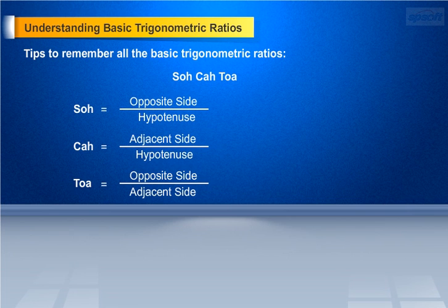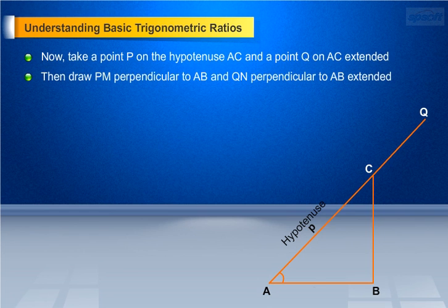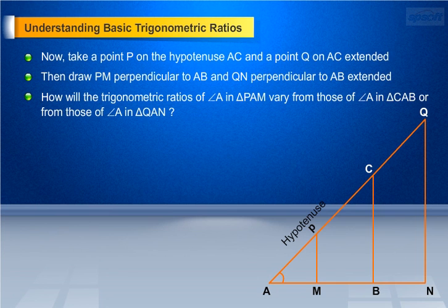Now that you are able to identify and recall the six trigonometric ratios, let us move further by considering a right triangle ABC. Take a point P on the hypotenuse AC, and a point Q on AC extended. Draw PM perpendicular to AB, and QN perpendicular to AB extended. How will the trigonometric ratios of angle A in triangle PAM vary from those of angle A in triangle CAB, or from those of angle A in triangle QAN?